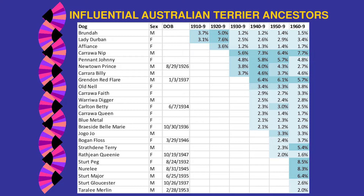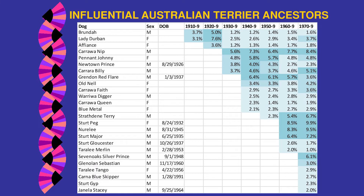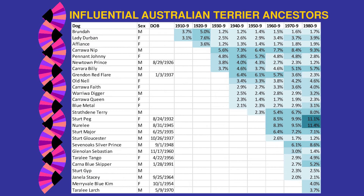In the 1960s, Carawa Nip's influence increases, Grendon Red Flair continues, Strathdeen Terry jumps up, Sturt Pegg, Neurali, Sturt Major appear — dogs that are influential in today's dogs starting to show up. From the 1970s on: Sturt Pegg, Neurali, Sturt Major, and Seven Oaks Silver Prince, born in 1948, comes in. Taralee dogs start showing up. In the 1980s, Lady Durbin is behind everybody — still going up, as is Carawa Nip. Sturt Pegg and Neurali are now over 10% relationship to every single dog in the 1980s.